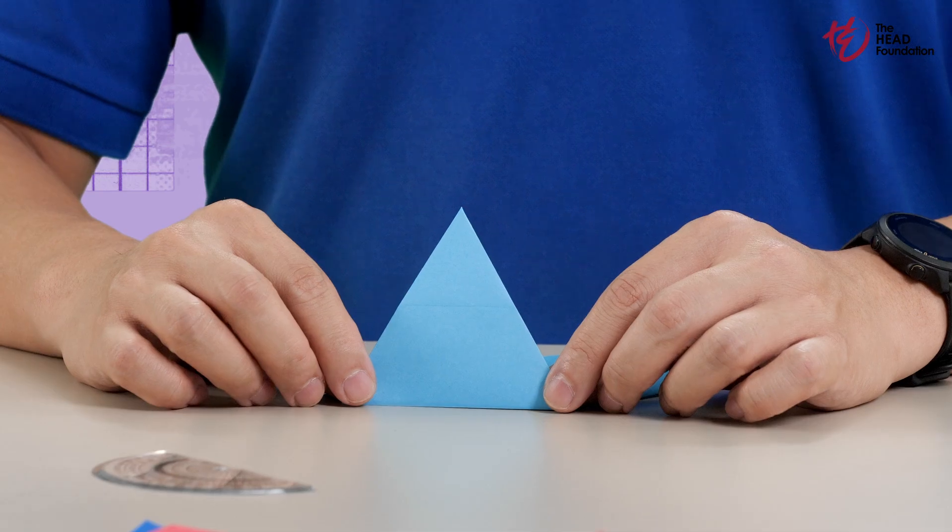Here's my equilateral triangle. Does it look the same as the one you made? What additional steps did you do to construct your triangle?